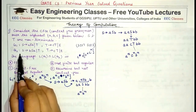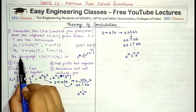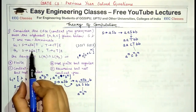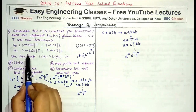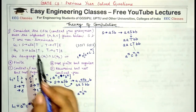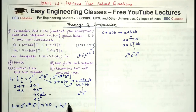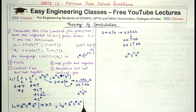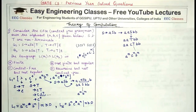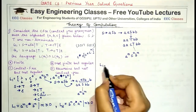G2 uses a similar set of productions; the only difference is aSb is replaced by bSa. So the language from G2 is almost the same — the order of a and b is different. L2 = b^n c* a^n, such that n ≥ 0.